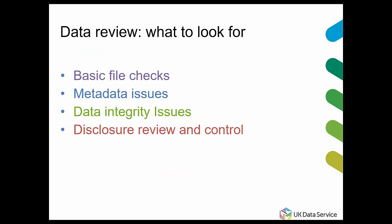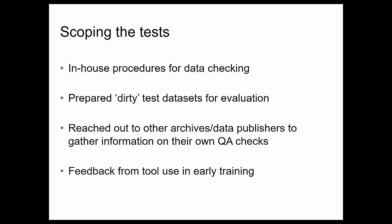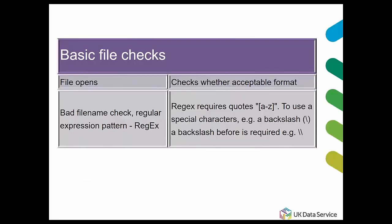We have four types of review domains. First, we're checking for the basic file itself — errors in things to do with the file. Second, we're checking metadata. Third, we check data integrity — that's the actual data, the numbers, the values. And fourth, we're checking for disclosure review. We scoped the tests by looking at our own procedures, prepared dirty test datasets with all known errors, and reached out to other colleagues, archives, and researchers asking what they checked for. Our basic file checks use our tool to check whether the file opens and whether it has a bad file name using regex — regular expressions.